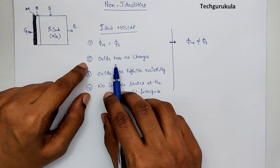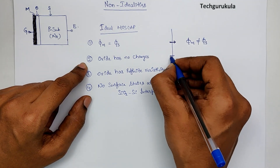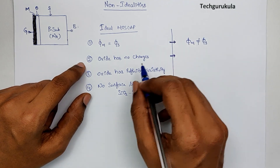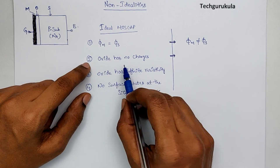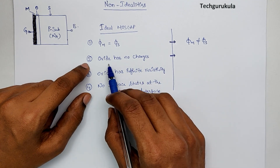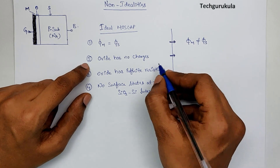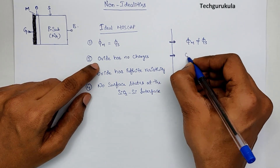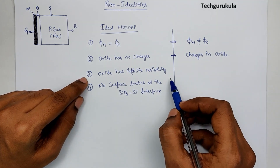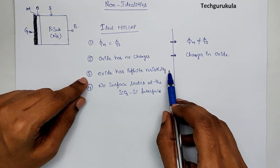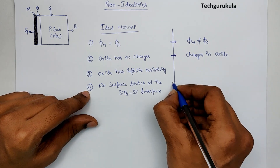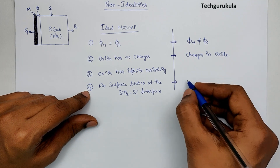Coming to the second assumption — oxide has no charges — but in reality, during fabrication or manufacturing, there will be some positive charges trapped in the oxide. We'll discuss why in the IC technology segment on oxidation. We are still going to assume that oxide has infinite resistivity. And for the last assumption, no surface states at the silicon dioxide-silicon interface — in reality, this cannot be made zero, so there will be surface states.